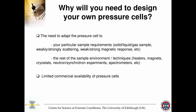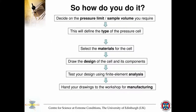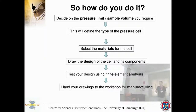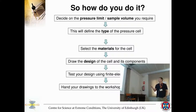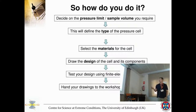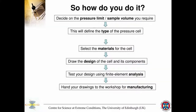In the design process, you first decide on the pressure limit or sample volume required for your experiment — that defines the type of pressure cell. If you need to go to a high pressure limit, you need an opposed anvil device; if sample volume is important, it will be a lower pressure piston-cylinder type device. Then you select the material, draw the design, test it using computer tools, and hand the drawings to the workshop for manufacturing.